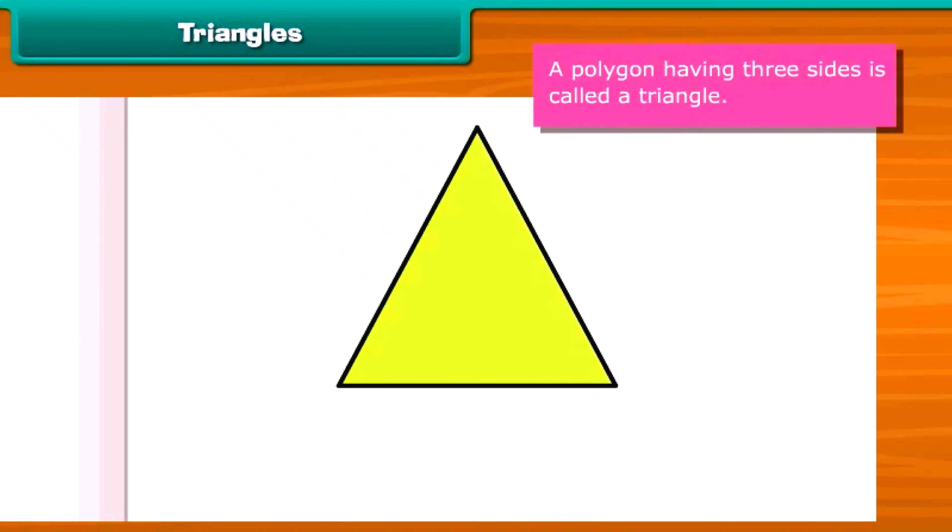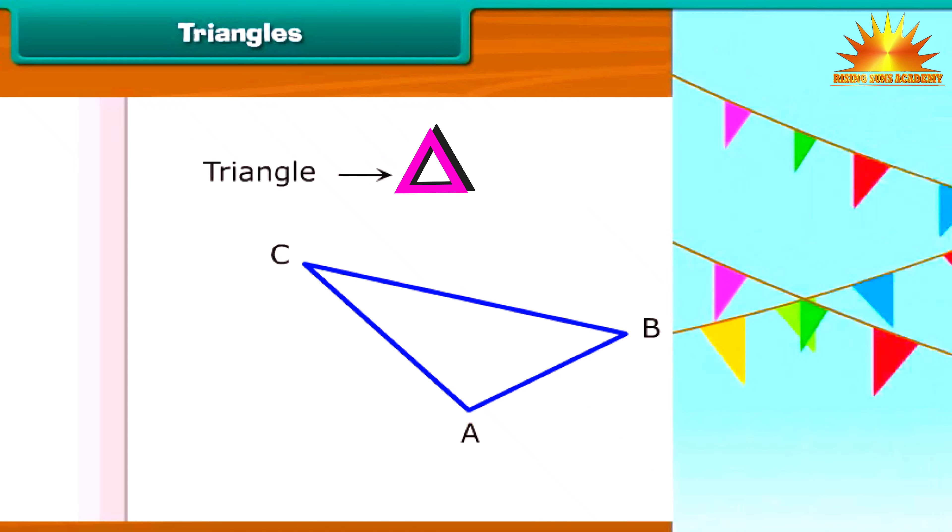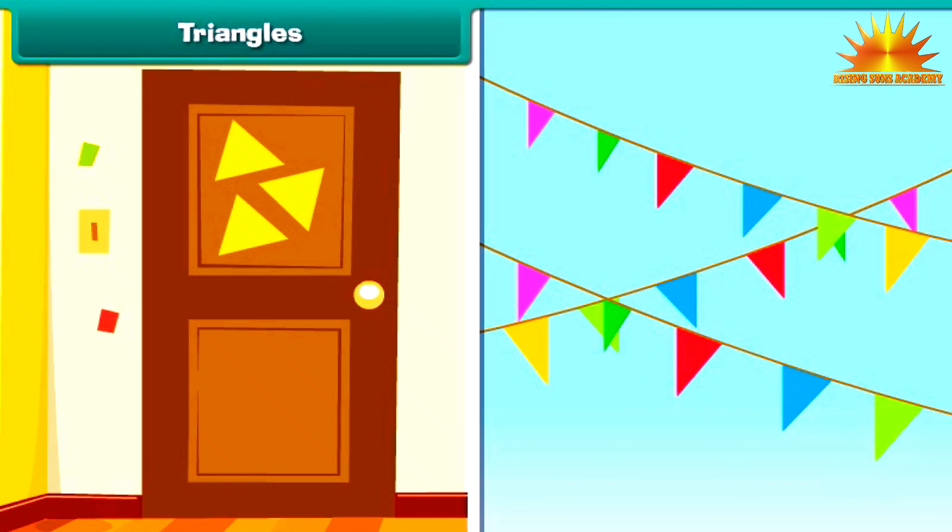A polygon having three sides is called a triangle. It has three vertices and three angles. Triangle is denoted by the given symbol. This is triangle ABC. It can also be named as triangle BCA or triangle CAB. Friends, can you recall some figures which are triangular in shape? Notice the flags in the ground and the design at the top. These are triangles.